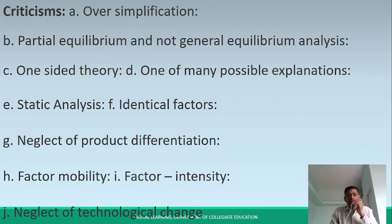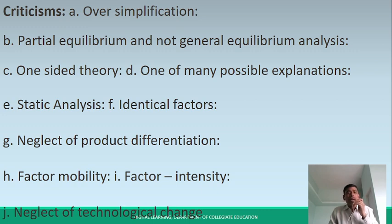What are the criticisms of this theory? First, oversimplification — compared to absolute and comparative theories, it involves partial equilibrium and not general equilibrium. It is a partial equilibrium. Another criticism is that it is a one-sided theory — it is not a two-sided theory.